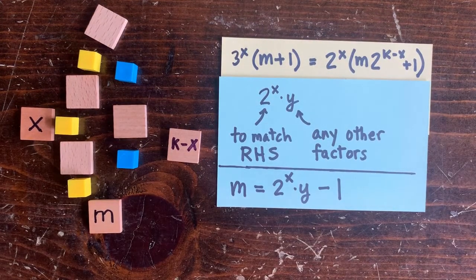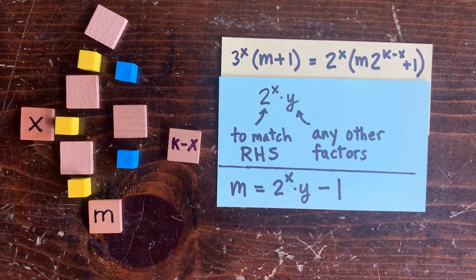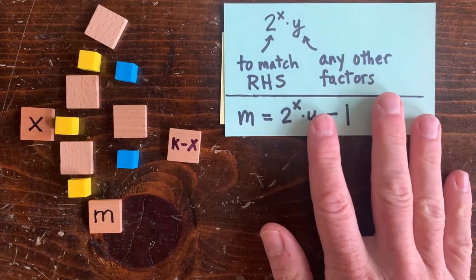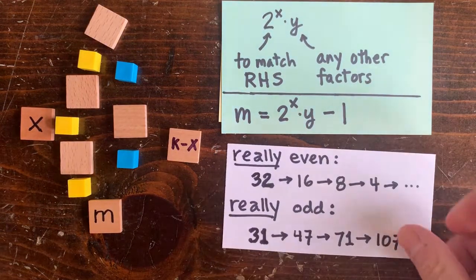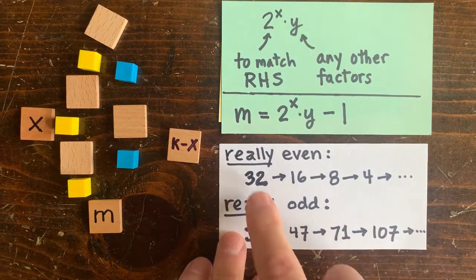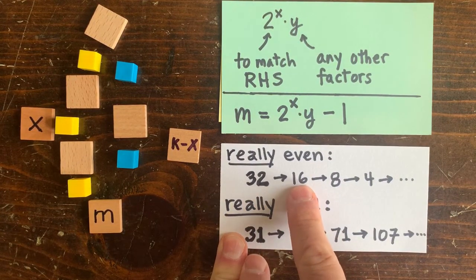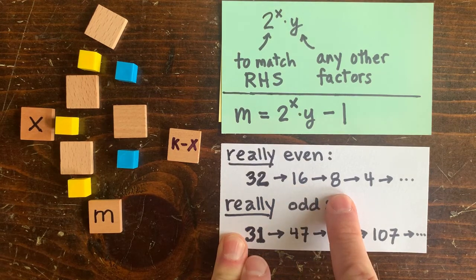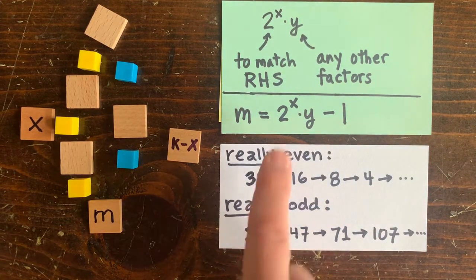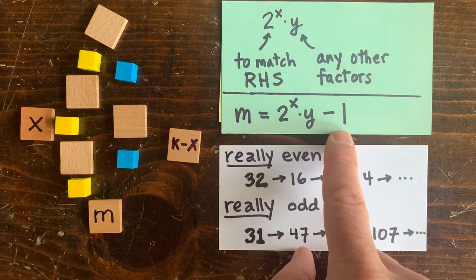Second of all, m has a particular form, basically 2 to the x minus 1. So 2 to the x are numbers like 8, 16, 32, 64, 128. And these are not just even numbers. They're really even numbers. So if you take one and you cut it in half, you still get an even number. And if you cut that in half, you get an even number until you get to 1.